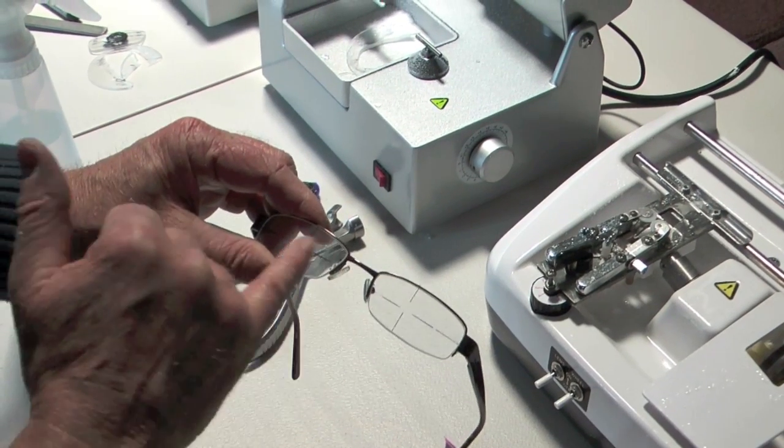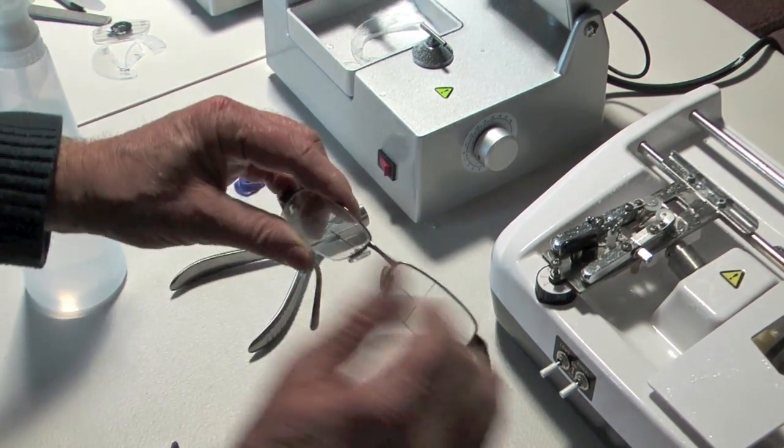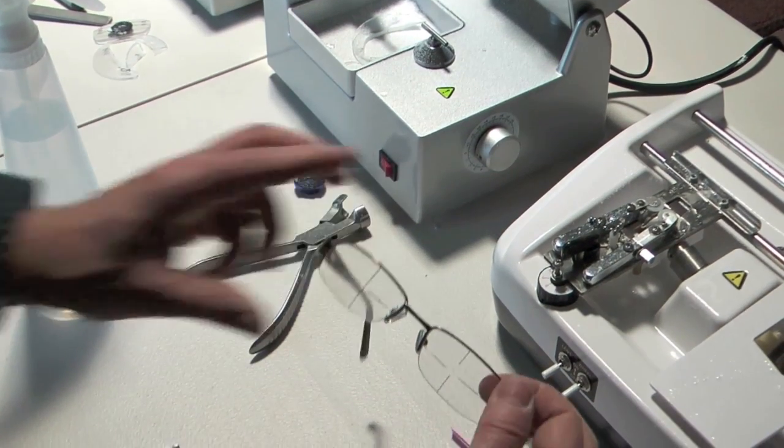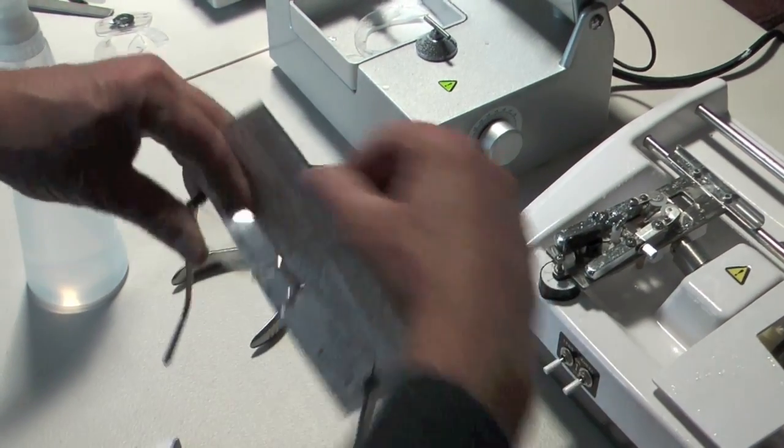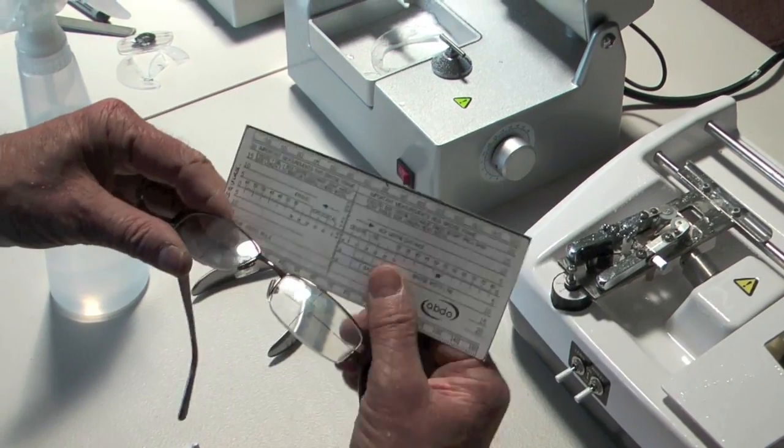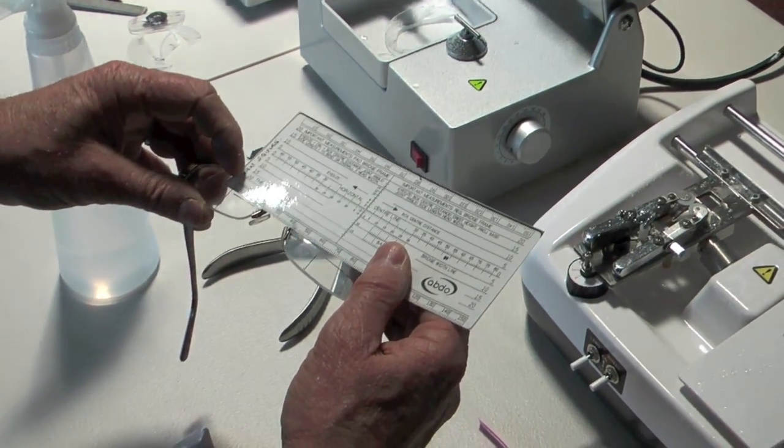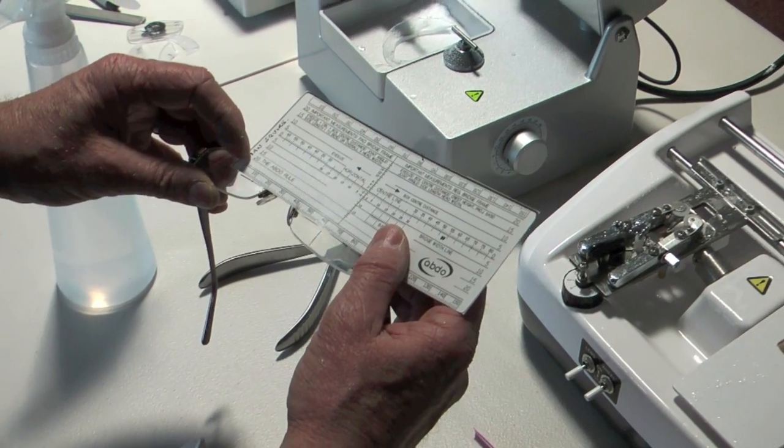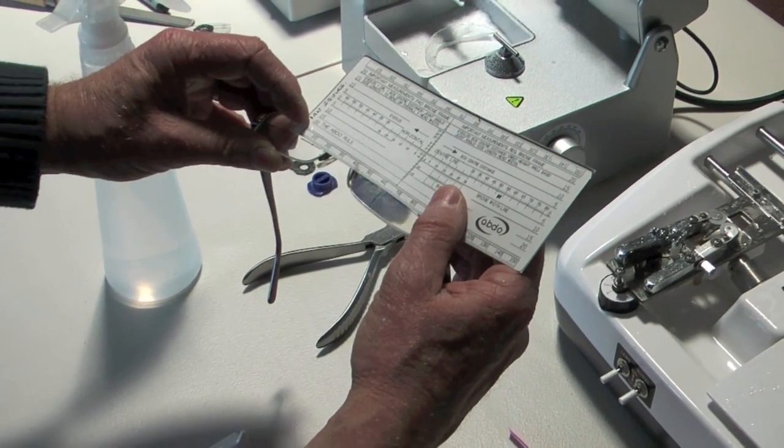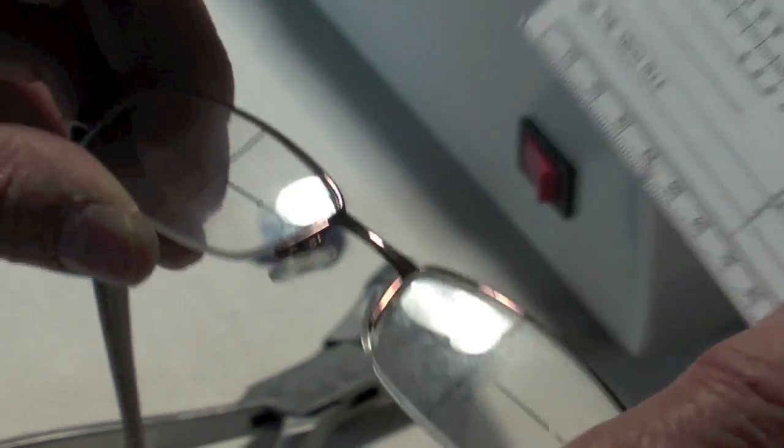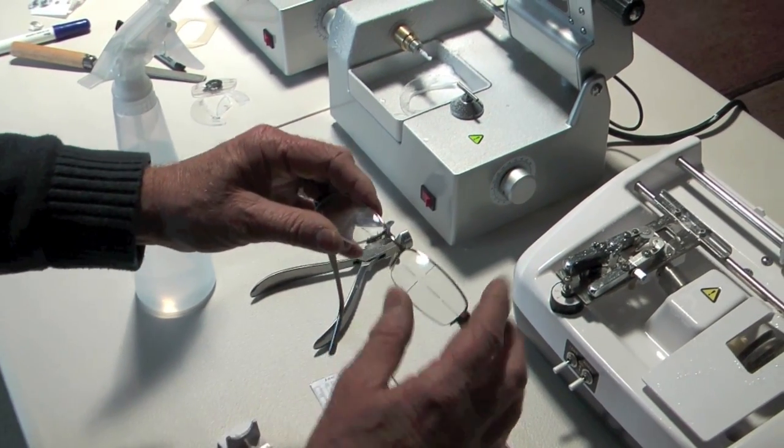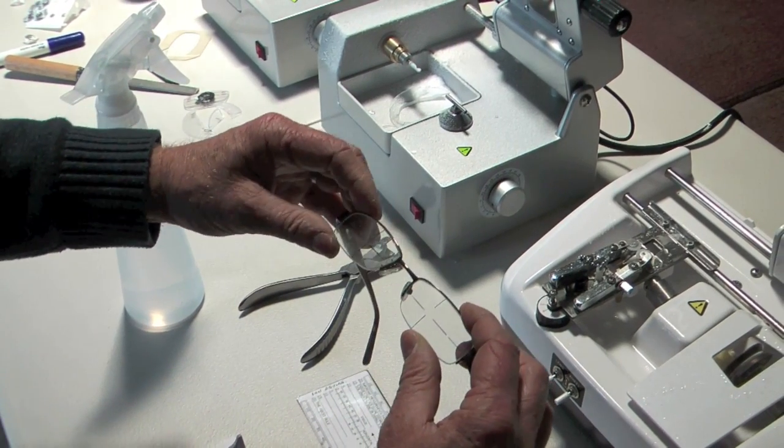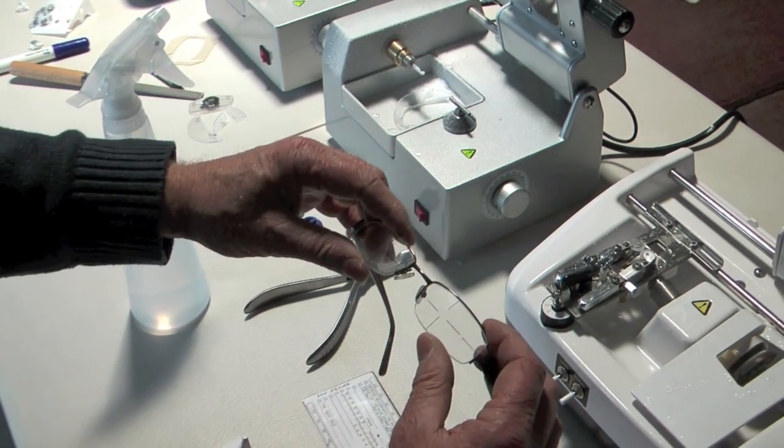Now the distance between these two lines should match the PD, which should be 62mm or thereabouts. Remember that we de-centered the lenses. So we've got there and it's actually about 61. But that's very good. I mean that doesn't matter too much. One millimeter is fine. So what we're going to do now is I'm going to clean the lenses and then we're going to see what the prescription is to make sure that it's accurate to what we wanted.